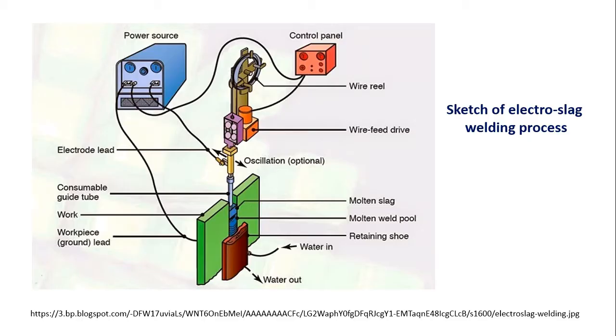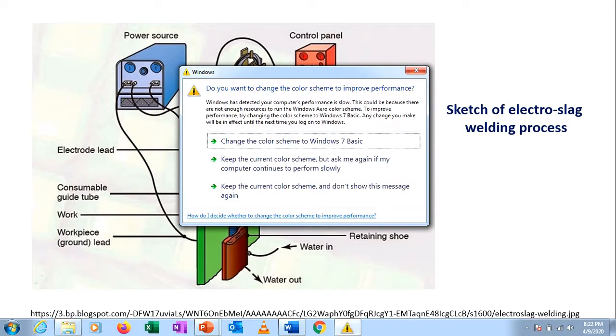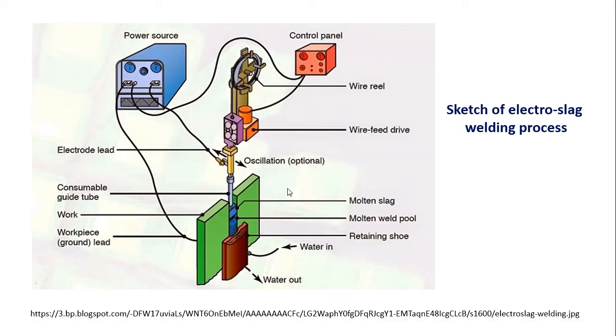This is a schematic diagram of the electro-slag welding process. You can see there are three major elements needed. One is the power source which gives electrical power to the workpiece and to the electrode, with the help of this the arc is generated. Second is the control panel which controls the feed rate of the electrode. Another is the cooling circuit which carries out the heat generated during the welding process.